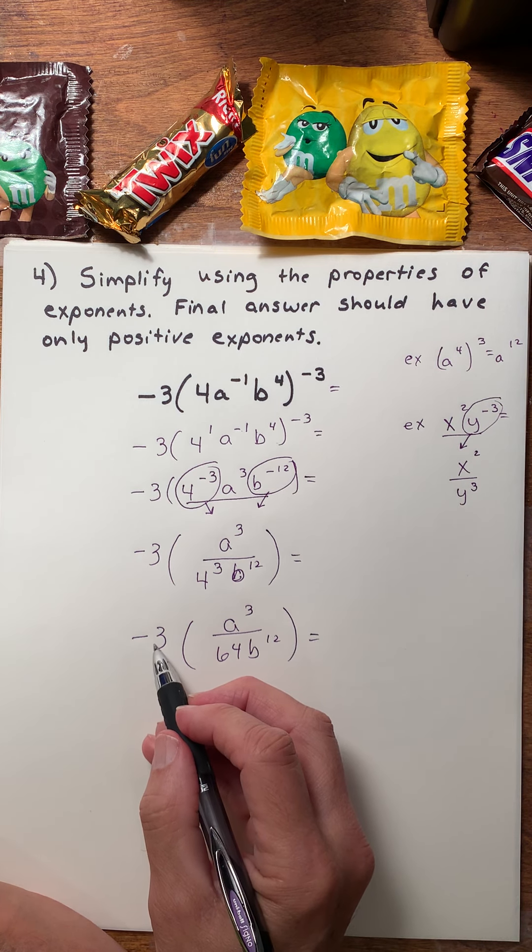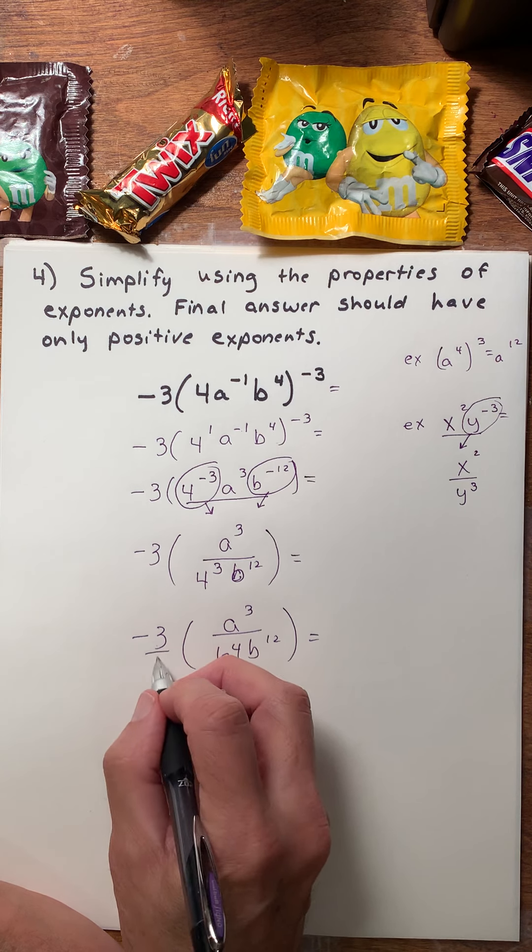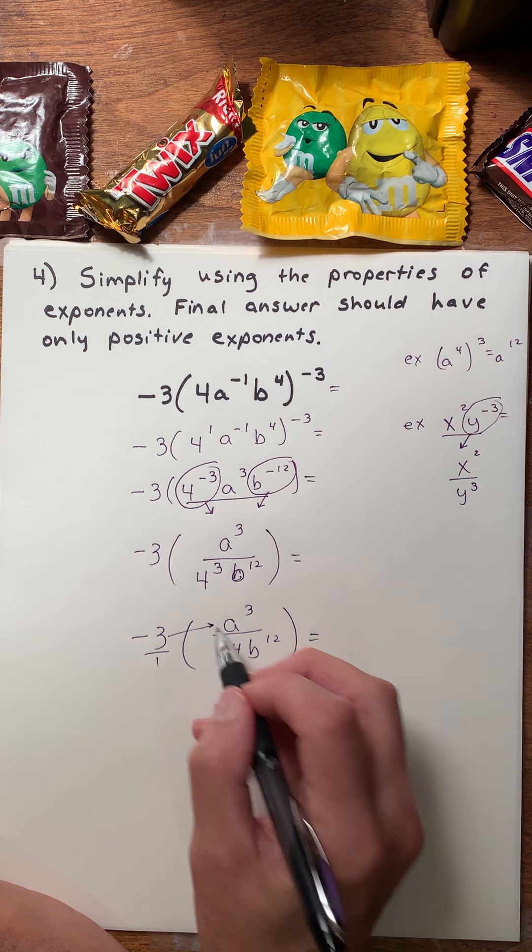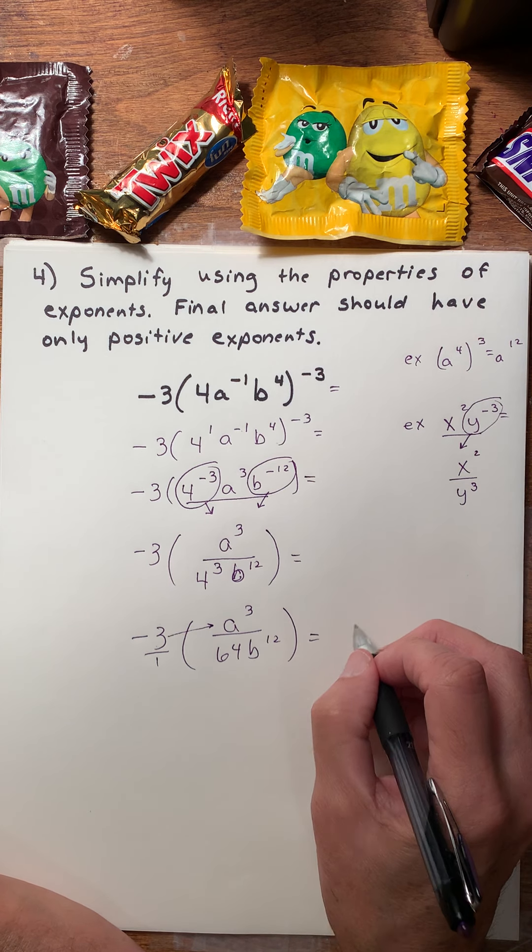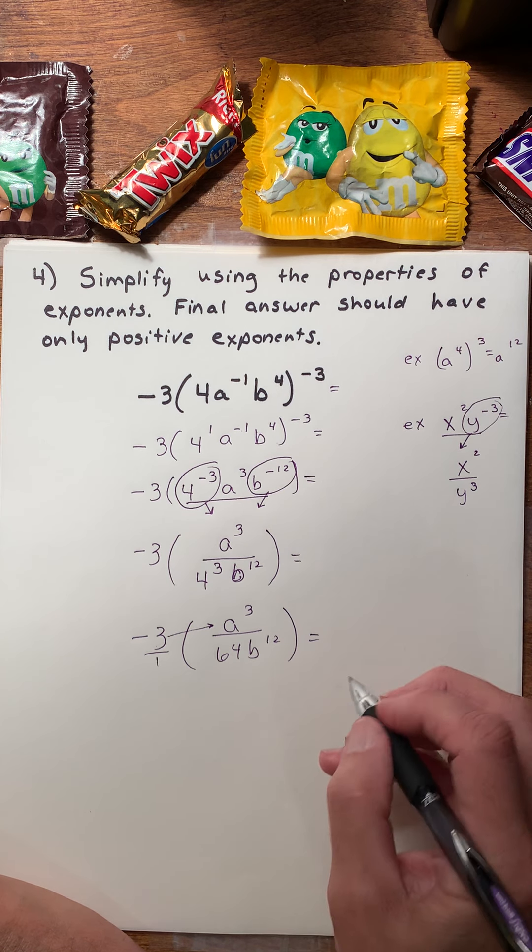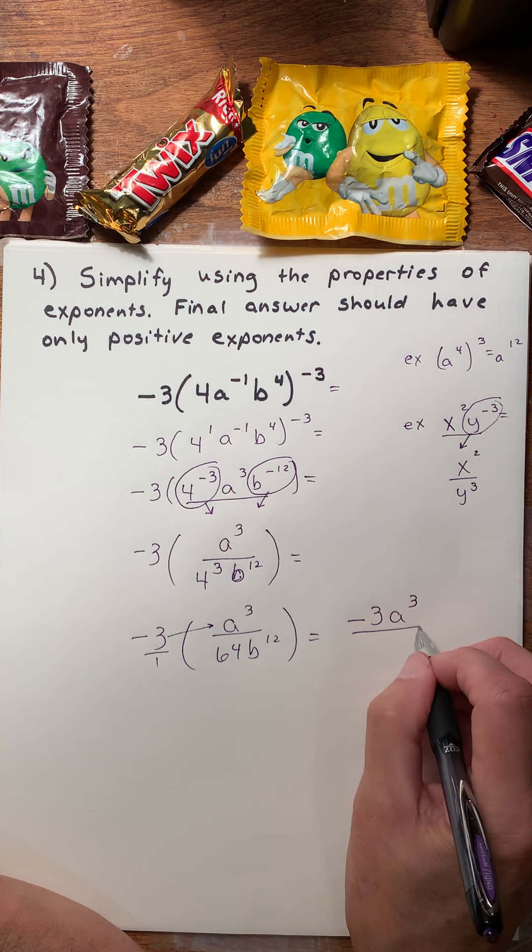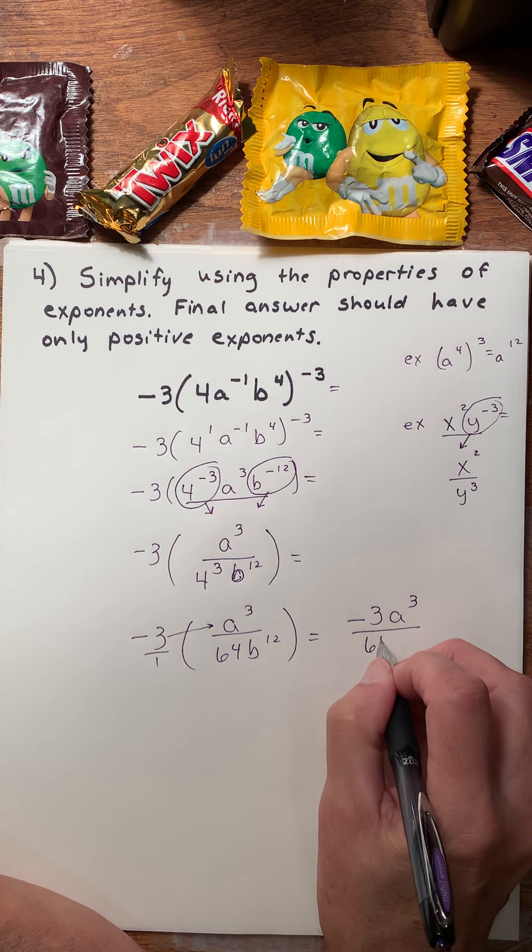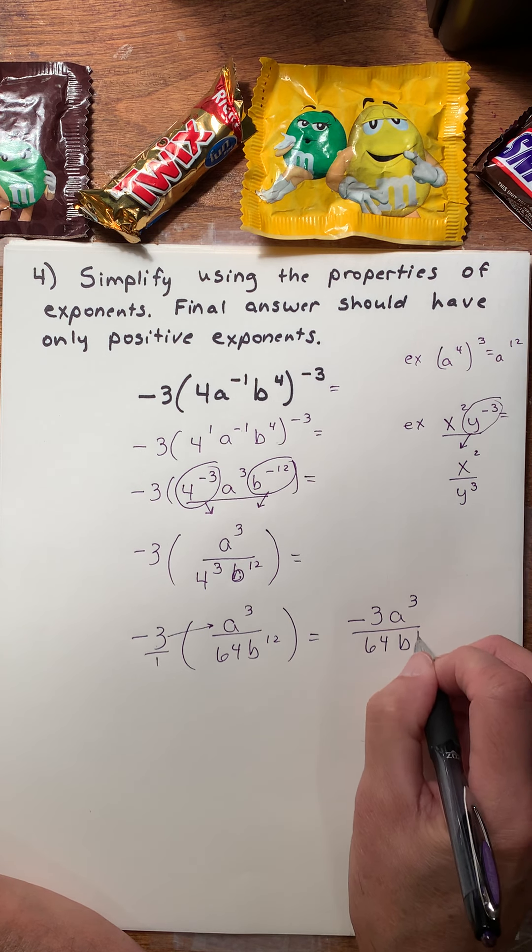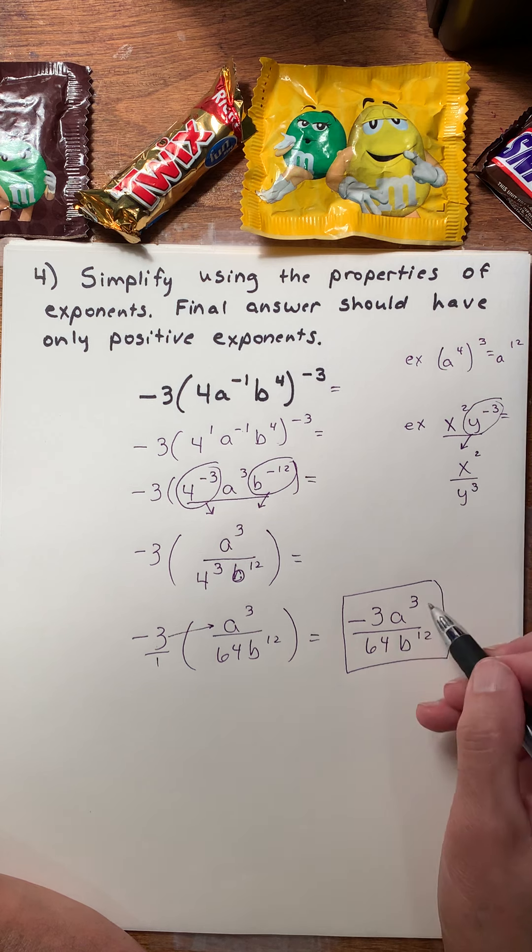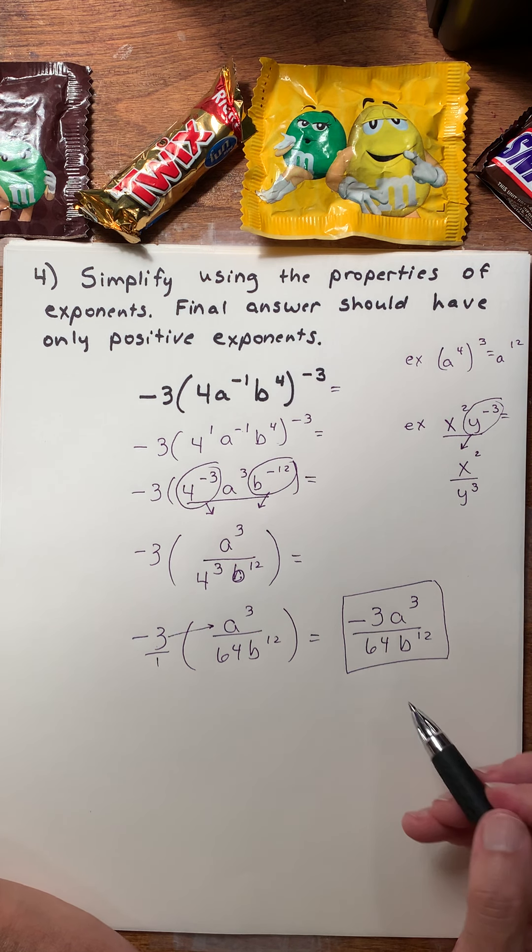And one thing you're going to want to do is simplify things that you can simplify easily. Four to the third is sixty-four. And remember that any whole number is over one. So I'm going to be multiplying the negative three by the numerator only. So my final answer is negative three, A to the third, over sixty-four, B to the twelfth. Notice only positive exponents.